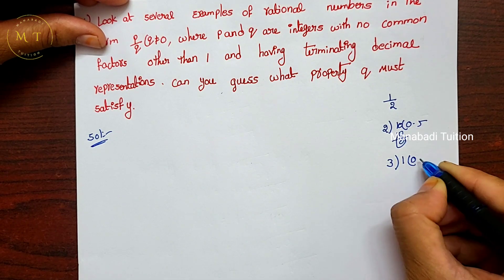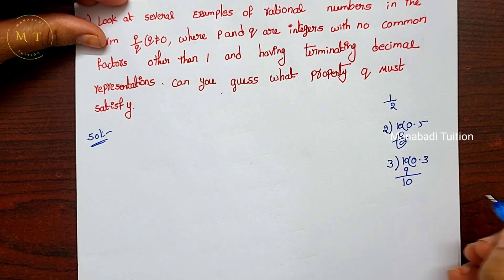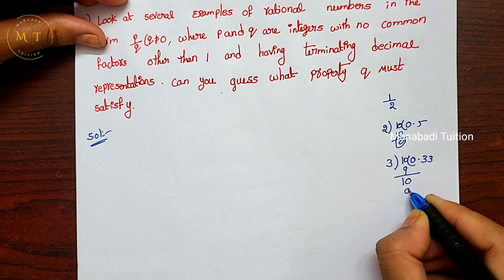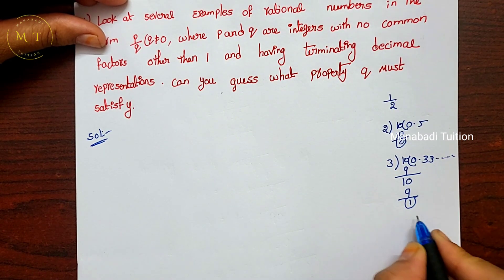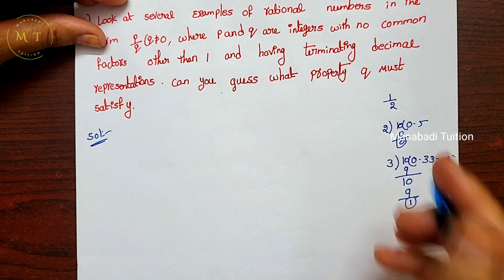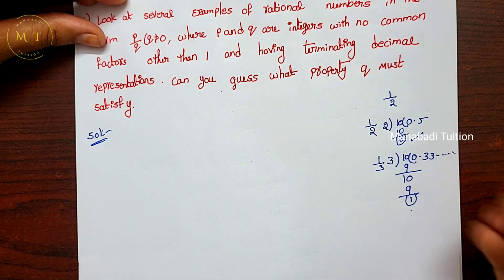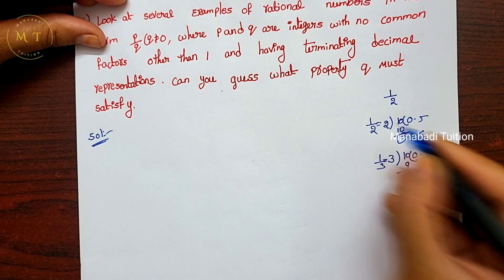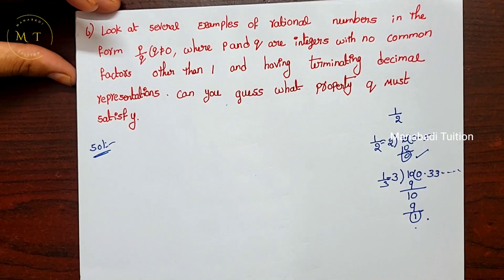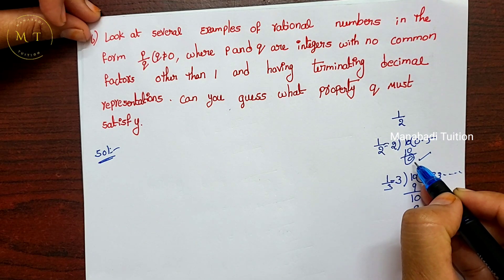Now take 1 by 3: when you divide, you get 0.333... — the 3 repeats and never stops. So this is a non-terminating decimal. If the remainder is 0 it is a terminating decimal; if the remainder never becomes 0, it is a non-terminating decimal. We need to find terminating decimals.